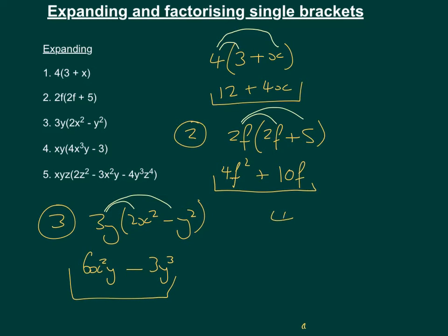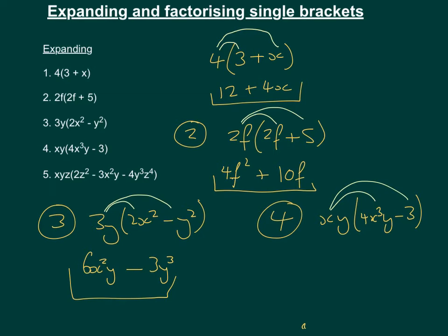Number 4 is xy outside of (4x³y - 3). Exactly the same method — multiply both terms by xy. The first term: 4 times x times x³ is x⁴, and y times y is y², giving 4x⁴y². Then minus 3 times xy gives minus 3xy.